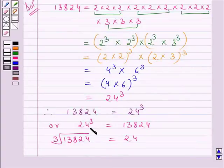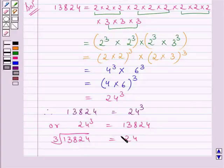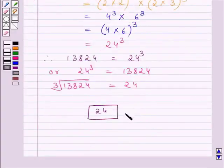From the key idea, we know that if a³ = b, then the cube root of b is equal to a. So this is our required answer. This completes the session. Hope you understood the solution. Take care and bye for now.